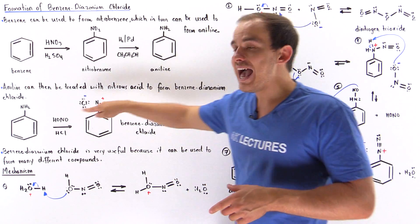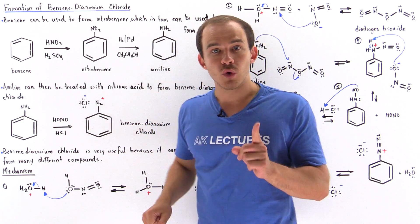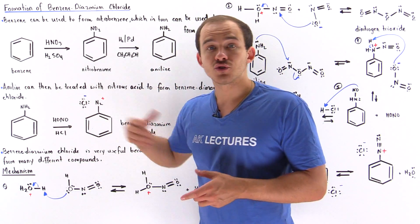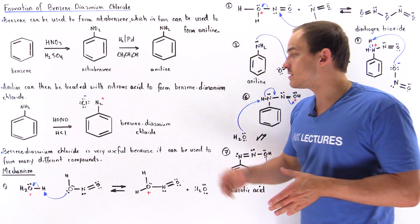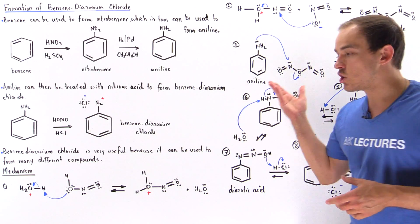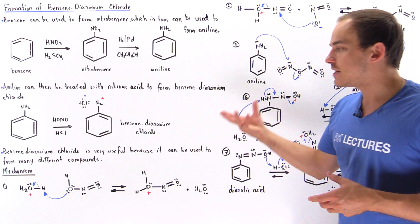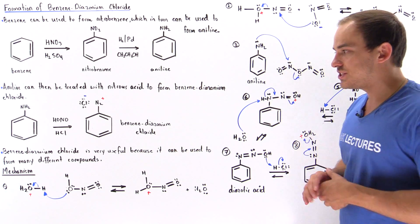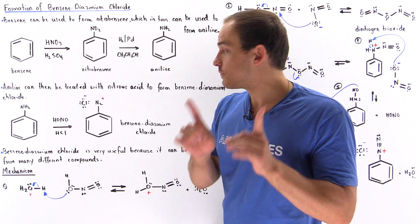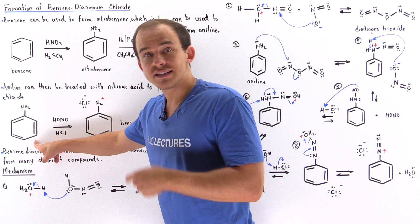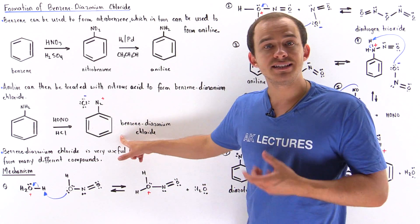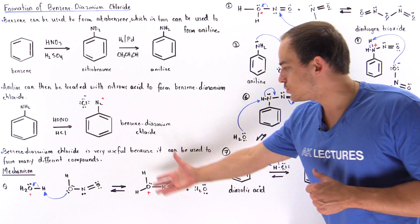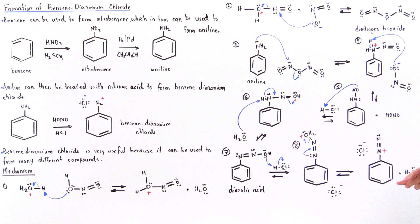If we take the aniline and react it with HONO (nitrous acid) in the presence of hydrochloric acid, we basically form benzene diazonium chloride, the final product. Let's now discuss in closer detail the reaction mechanism of going from aniline to benzene diazonium chloride. The reaction mechanism is shown on the right side of the board.